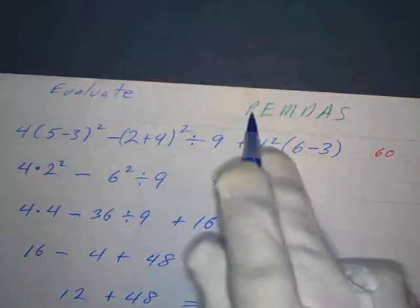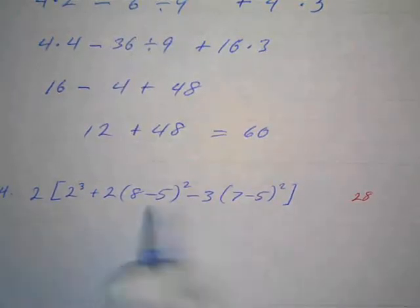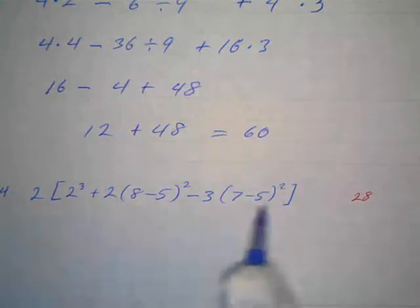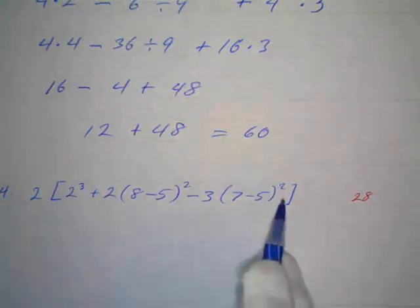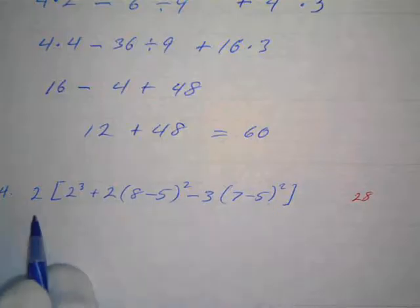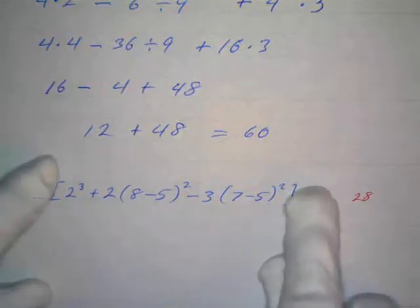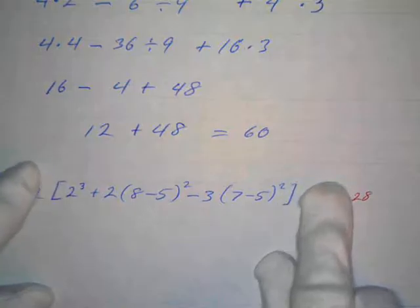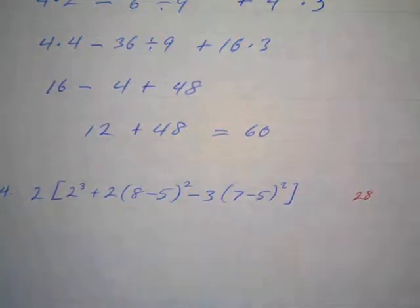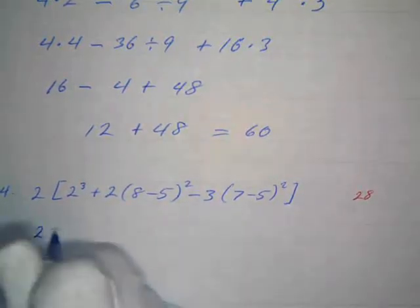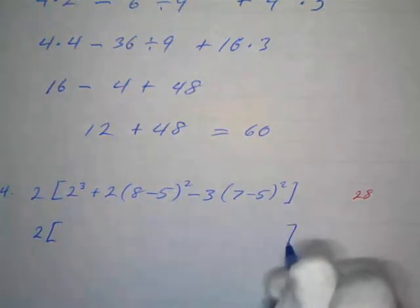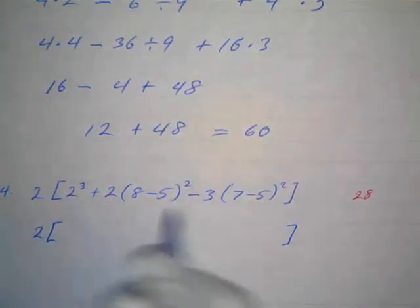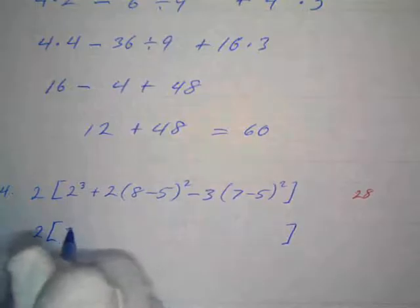All right, so first of all I'm gonna work inside the parentheses. Now this is interesting because remember if we have PEMDAS, we work inside parentheses. Well, now we've got parentheses inside parentheses, so we got this big bracket which is an outside parentheses. So we've got to get one number in this big old parentheses, and we've got little parentheses in here. So really what you do is just concentrate on these things right here. I try to get one number inside these parentheses, then we'll multiply by 2. So we've got 2 times this bracket.